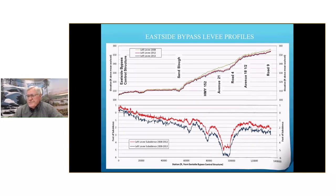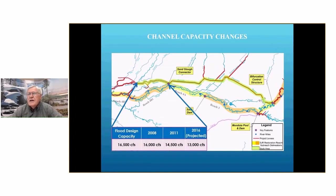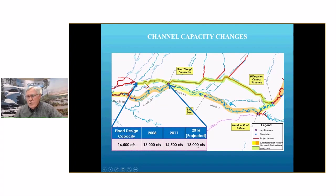DWR has been monitoring this. This is a portion of the bypass system in Merced County. The arrows designate where the subsidence is occurring. Flows are going from right to left, and as they get into this area between the arrow points, velocity slows down, sedimentation falls out, and you have a problem. This was a report done in 2014 — it was designed for 16,500 CFS, but they were expecting that by 2016, channel capacity would be reduced by almost 25%. That's just one of the things we have to monitor.